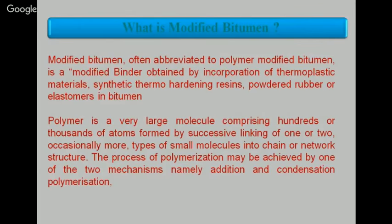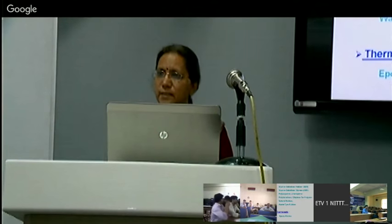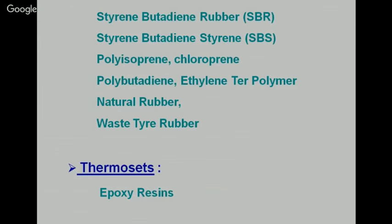Other thermoplastic examples include styrene butadiene rubber (SBR), styrene butadiene styrene (SBS), polyisoprene, chloroprene, polybutadiene, ethylene terpolymer, natural rubber, and waste tire rubber. Another type is thermoset — when heated, it cross-links, cures, and sets forever, never returning to its original form. Epoxy resin is an example, but thermosets are not successful for bitumen modification. Only thermoplastic-type polymers should be added to bitumen.